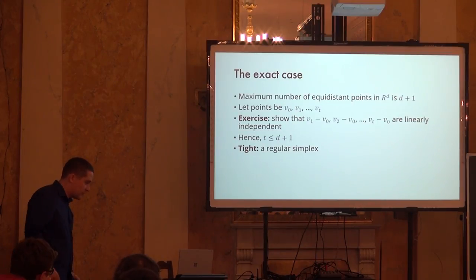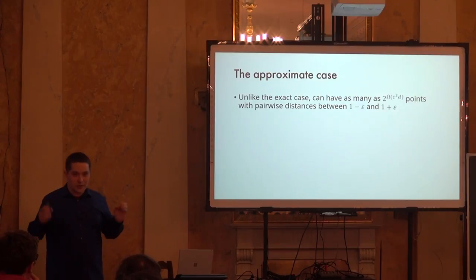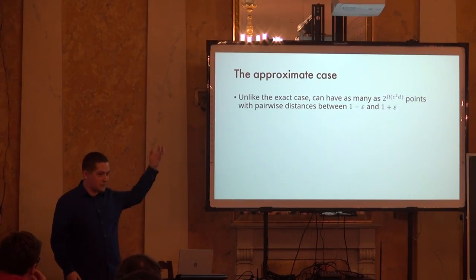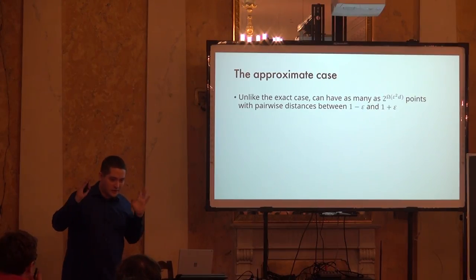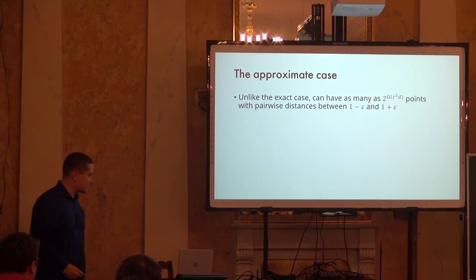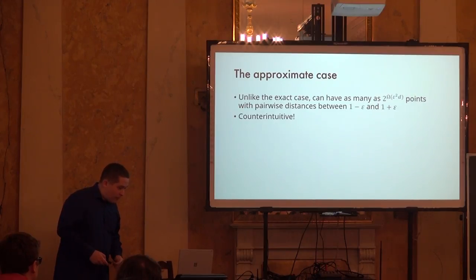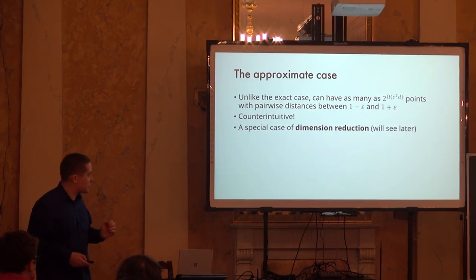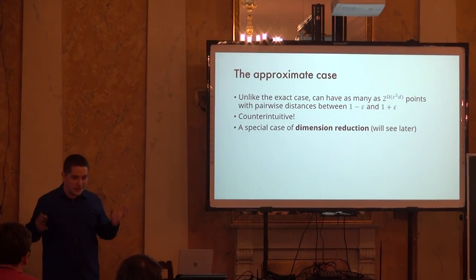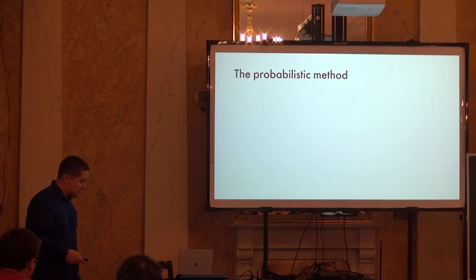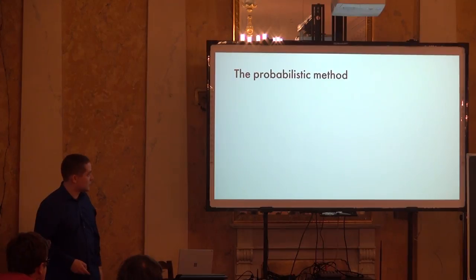The approximate case turns out to be far more interesting. As soon as you relax the constraint just a little bit, you can immediately place exponentially many points in the dimension. As soon as epsilon is a small constant and D tends to infinity, the simplex is extremely far from optimal — you can place way more points. This is quite surprising and very counterintuitive. To prove it, we use the probabilistic method. If you want to show that some object exists, instead of constructing it explicitly, you take a random object and show it works with positive probability.